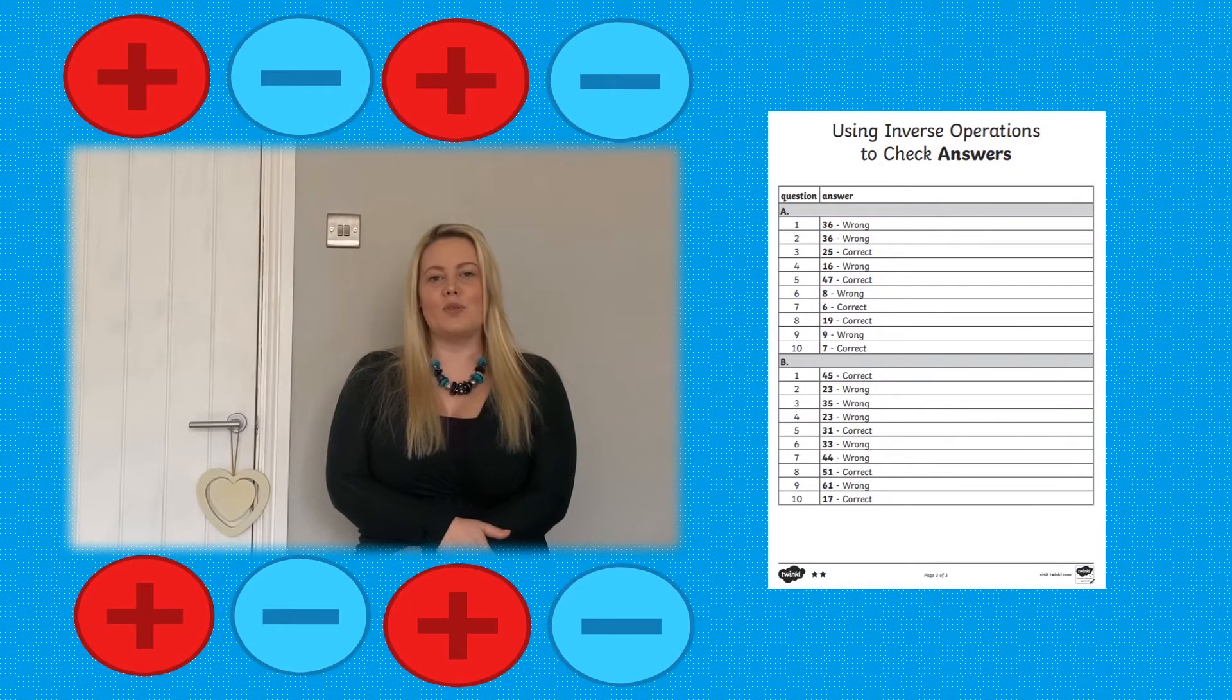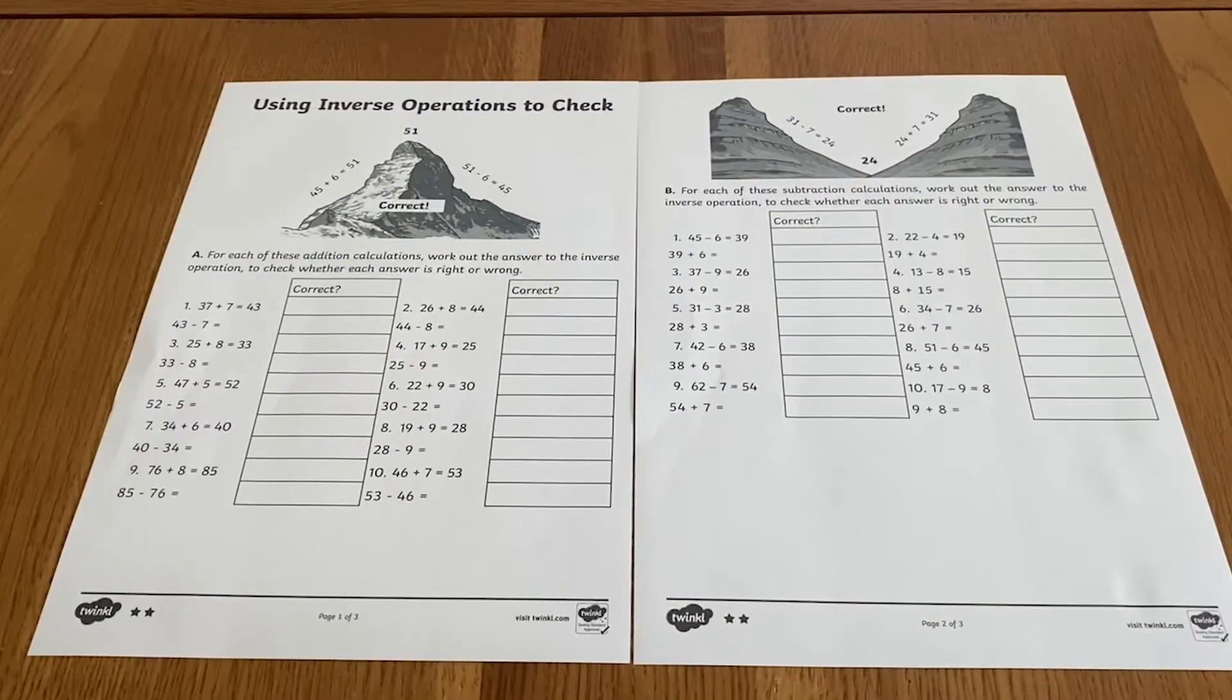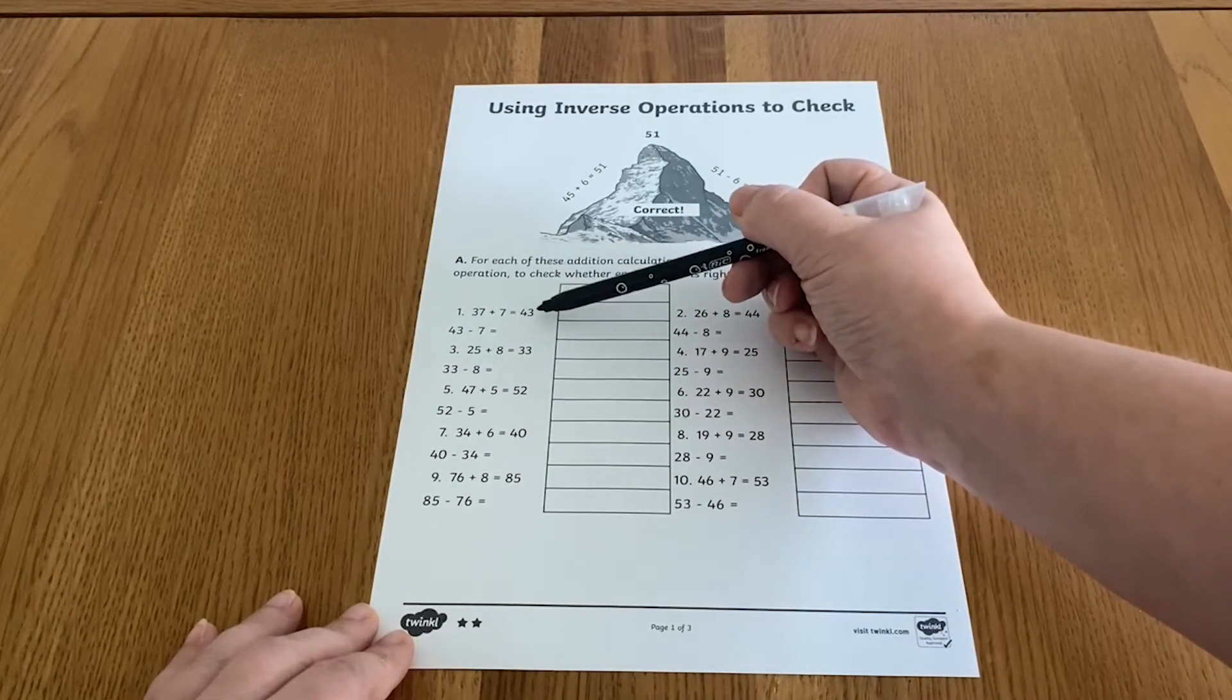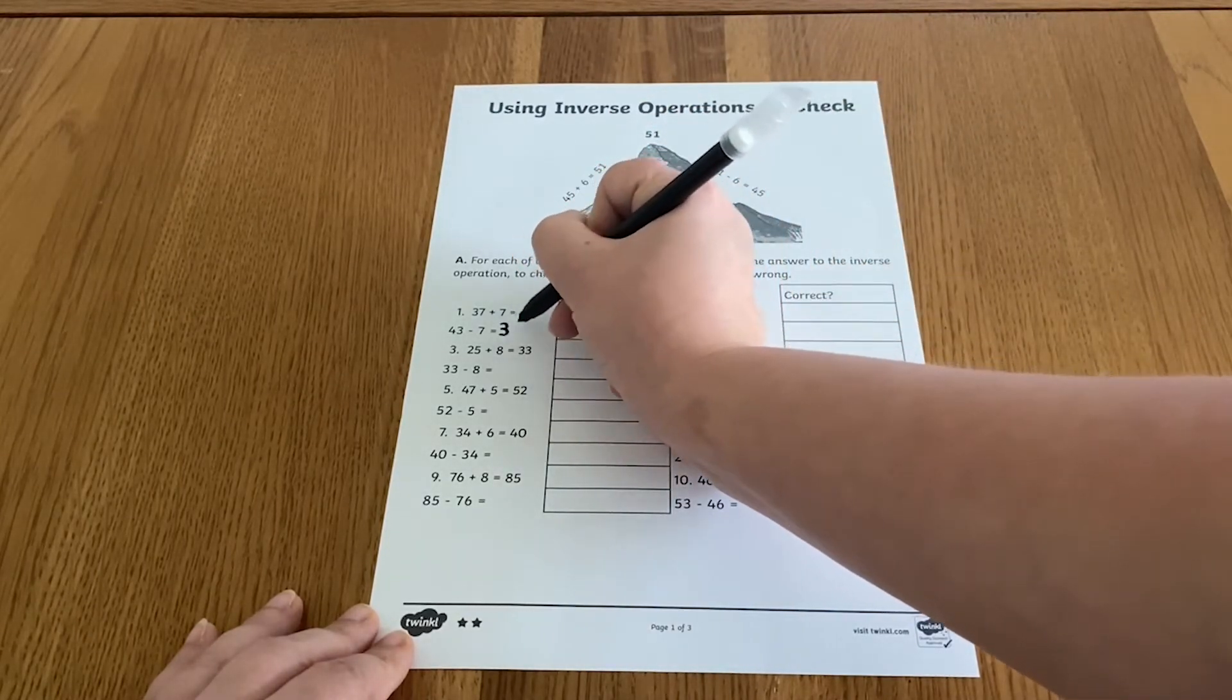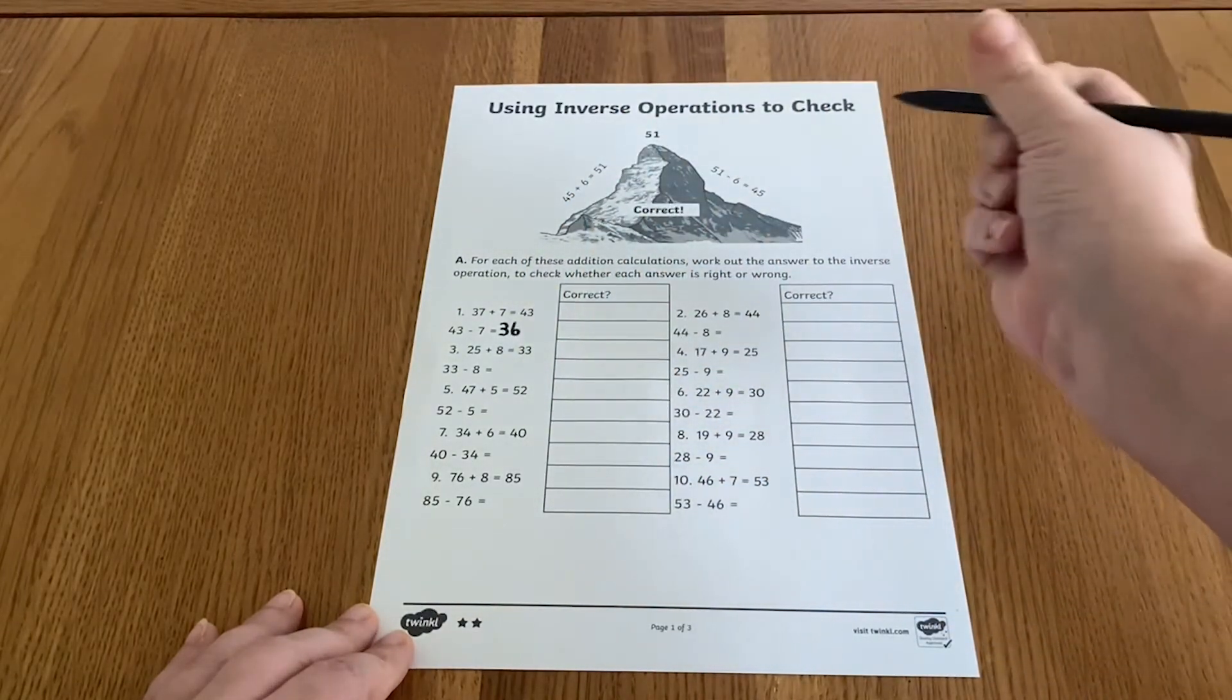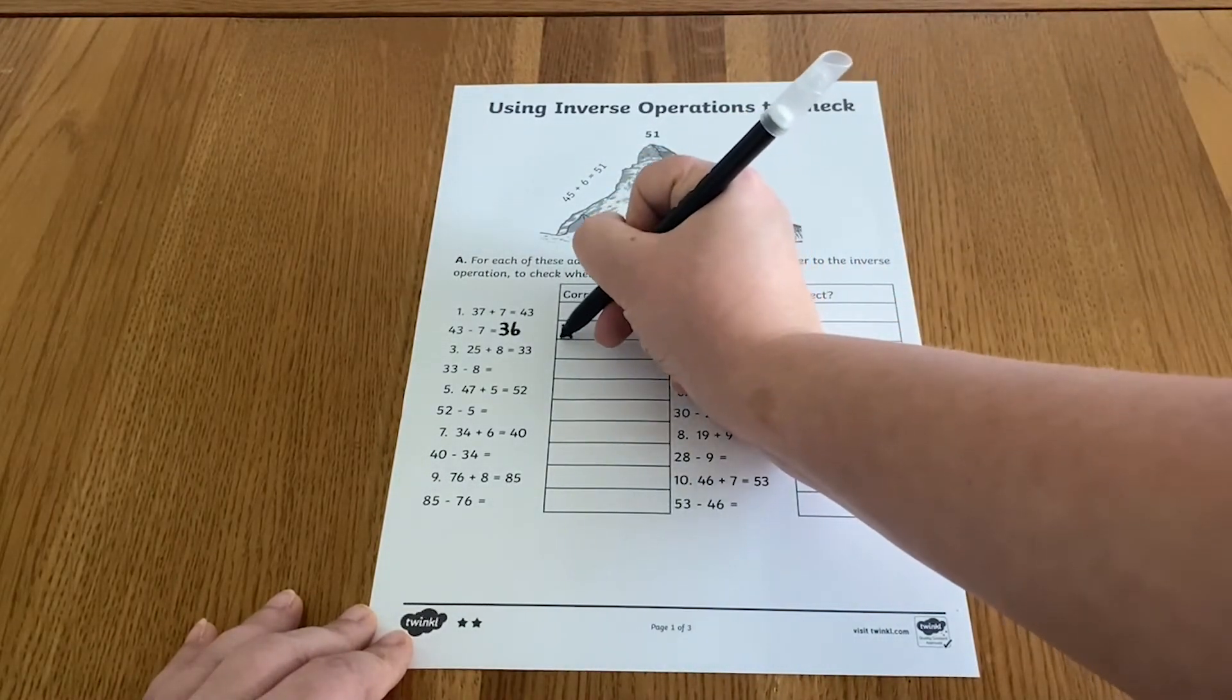This worksheet comes with a handy answer sheet so it's quick and easy to check learners' understanding. Ask learners to complete the subtraction calculations to check whether the addition calculations have been answered correctly. Here we can see that 43 subtract 7 equals 36. This doesn't match the numbers in the addition calculation which must have been answered incorrectly. Put a cross to show this in the boxes.